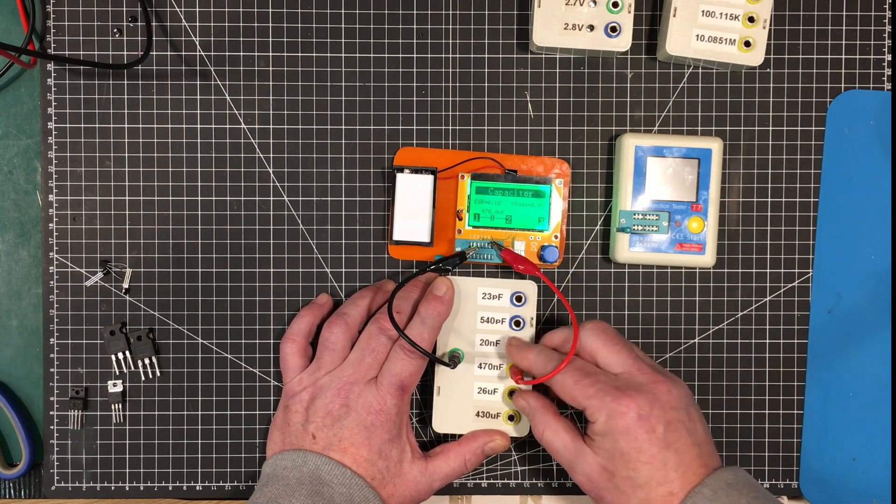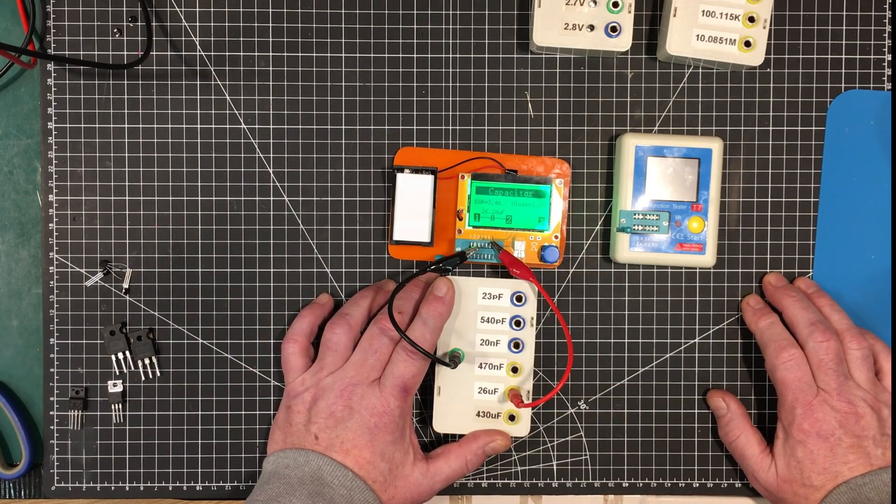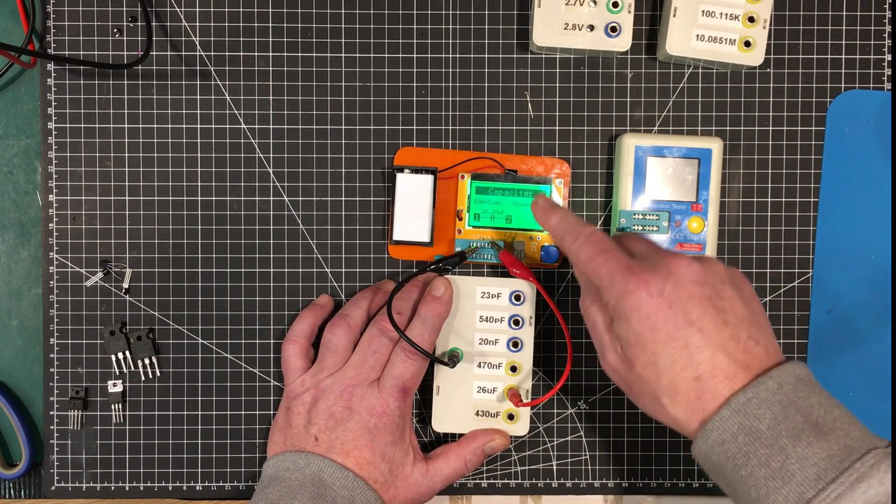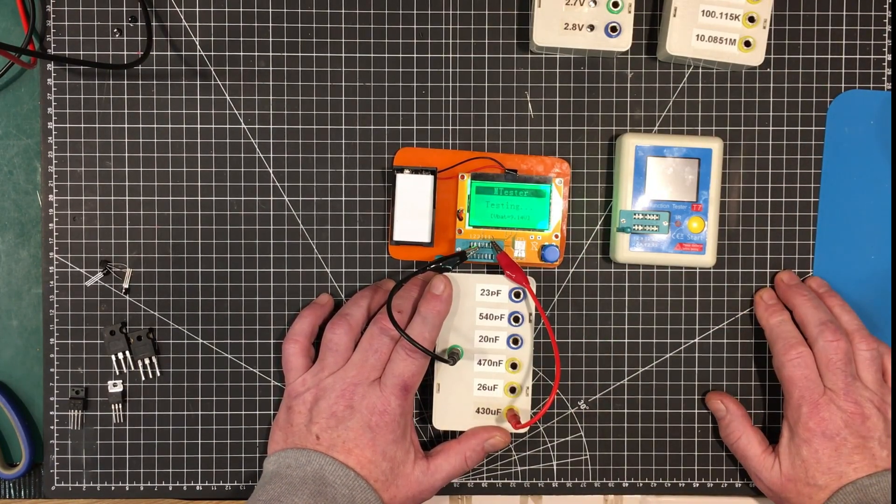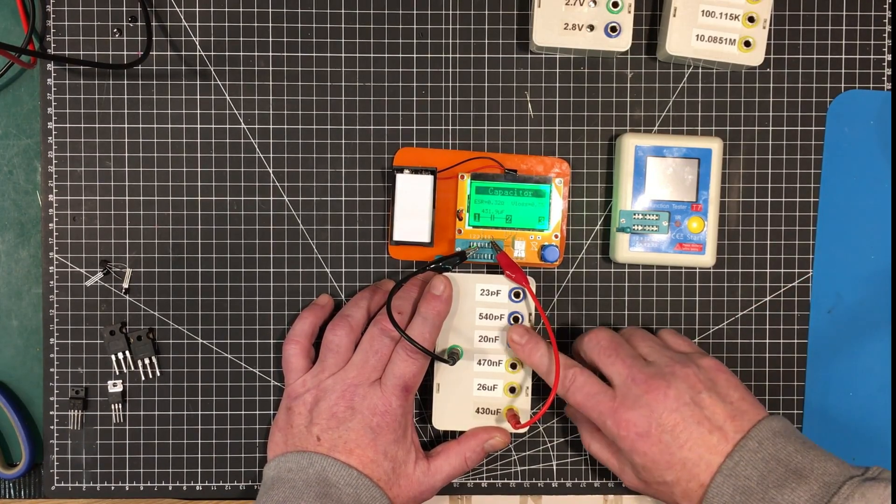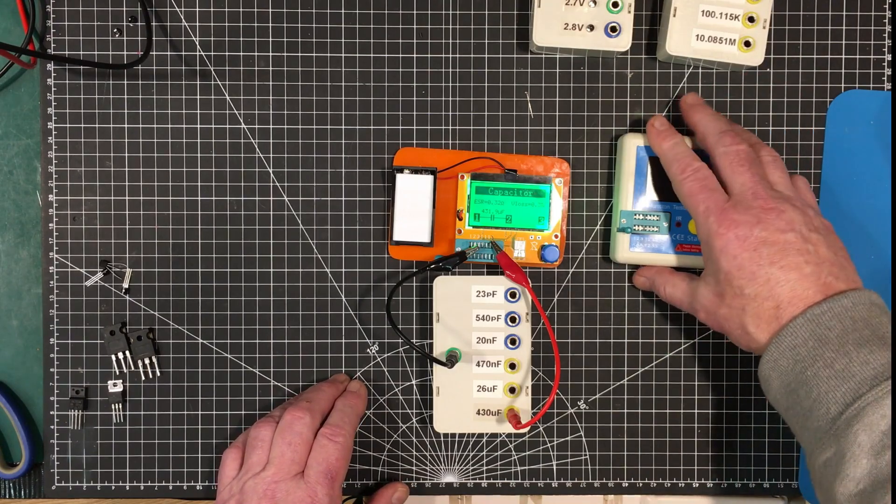It's got this one right on. ESR 6.1 ohms. 26.28. This seems to be a bit better than this one on the capacitance. This one here is much better in capacitance than this one. This one's better on resistance.